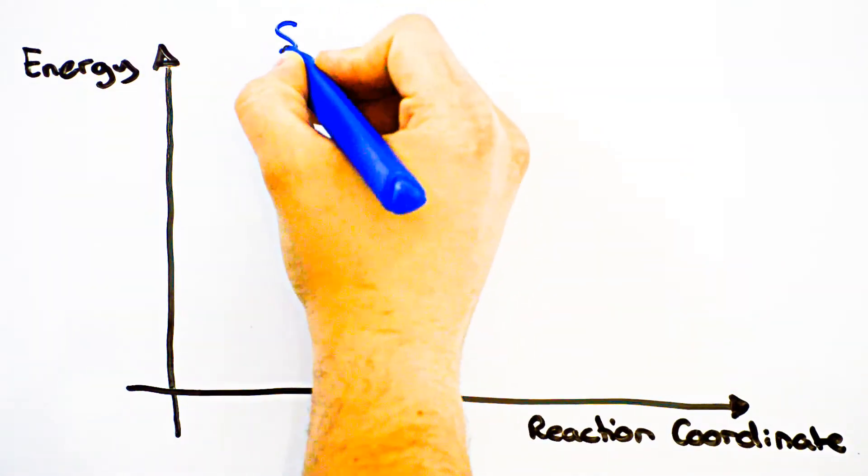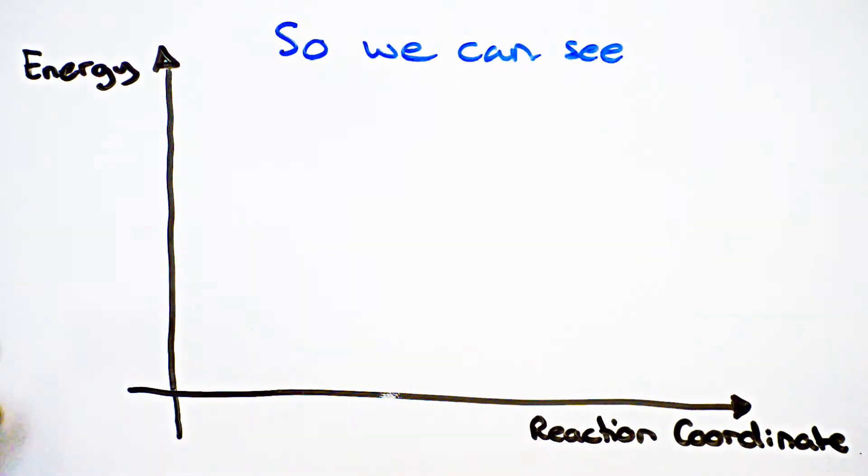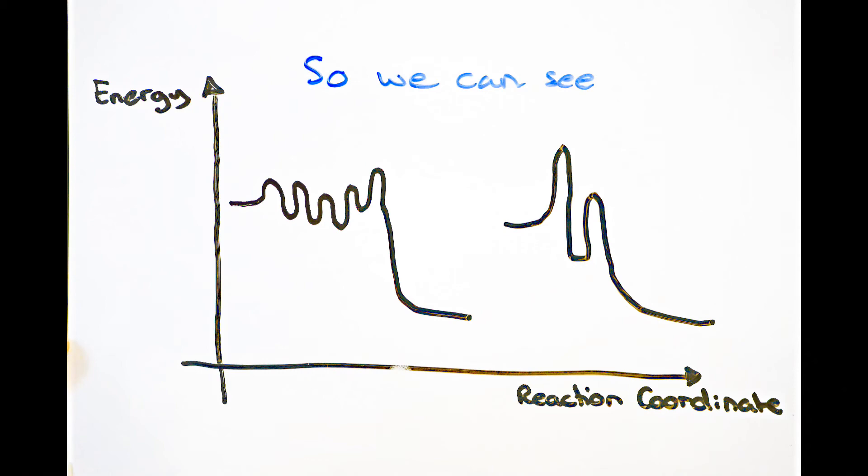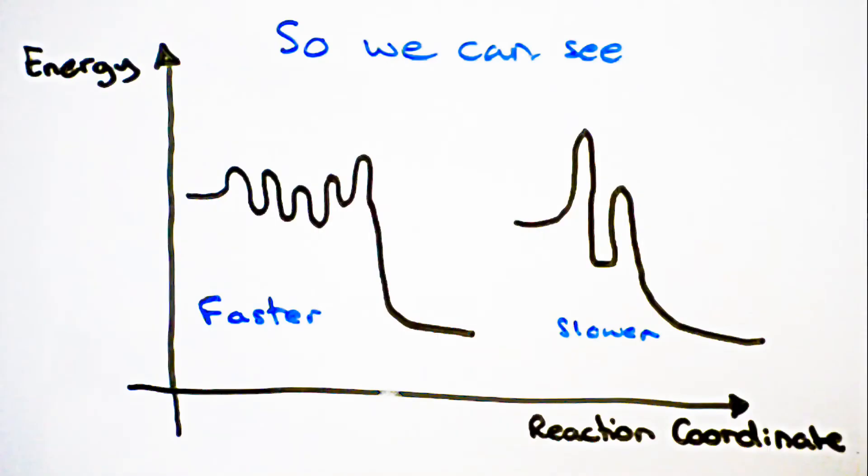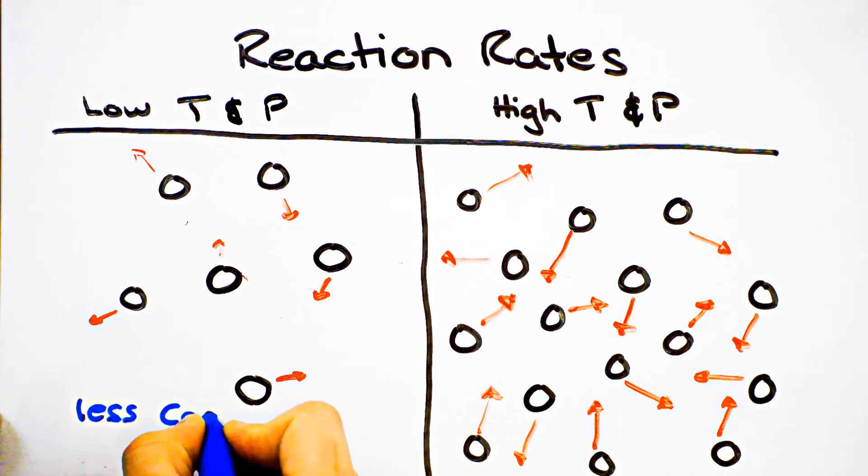From this, we can see that a reaction with a number of small activation barriers is largely preferred over those with few steps with large activation barriers. Reaction rates can also be improved by adjusting the temperature and pressure to improve the rate of collision.